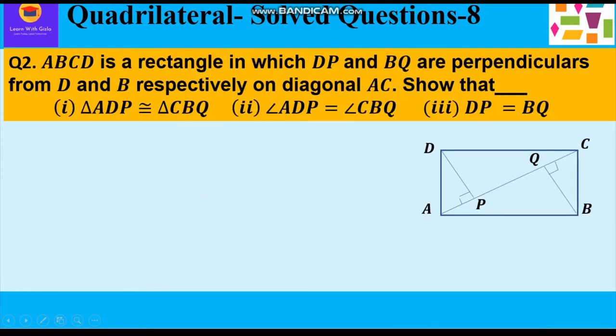Let's take up second question. ABCD is a rectangle in which DP and BQ are perpendicular from D and B respectively on diagonal AC.